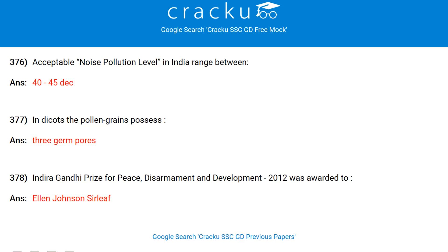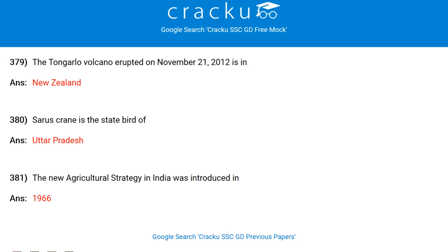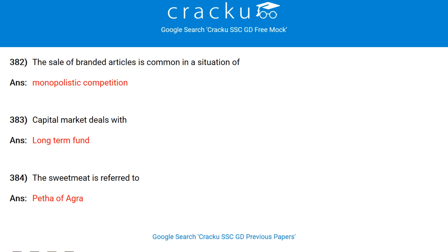Externality theory is the basic theory of the branch of economics called Environics. Acceptable noise pollution level in India ranges between 40 to 45 decibels. In dicots, the pollen grains possess 3 germ pores. Indira Gandhi Prize for Peace, Disarmament and Development 2012 was awarded to Ellen Johnson Sirleaf. The Tongariro volcano erupted on November 21st 2012 in New Zealand. Saras Crane is the state bird of Uttar Pradesh. The new agricultural strategy in India was introduced in 1966.